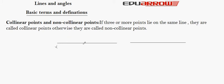Consider a line XY and take three points, say A, B and C on it. A, B, C are collinear points because they all lie on the same line XY. Take another line EF and take three points I, J, K. They are non-collinear points.